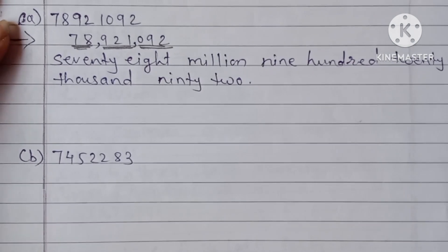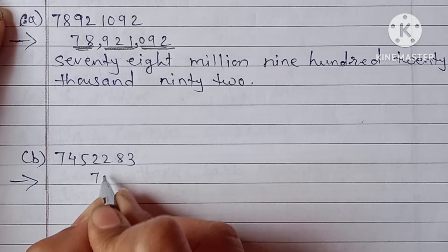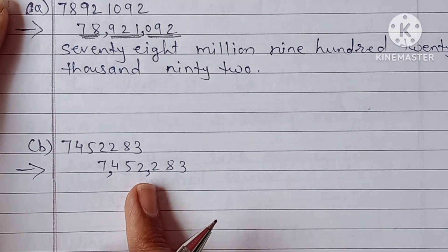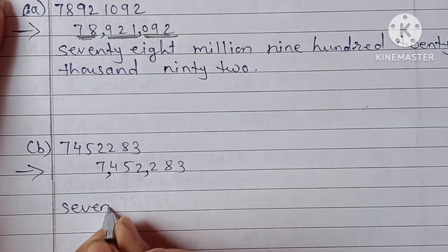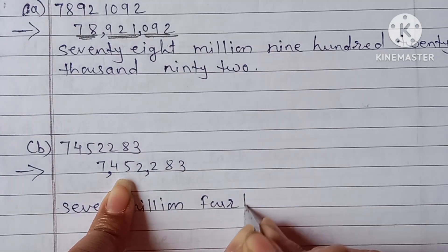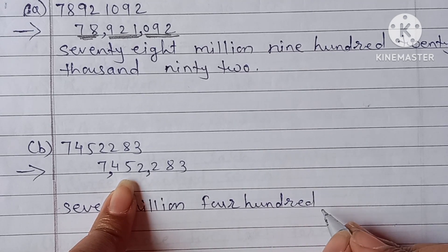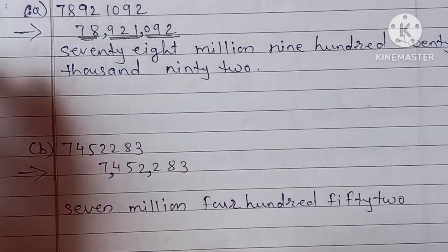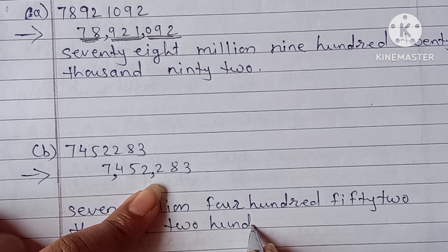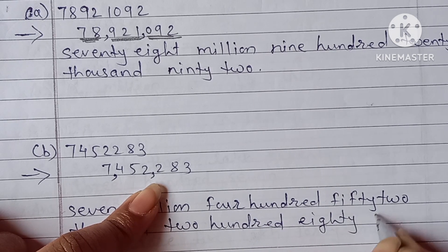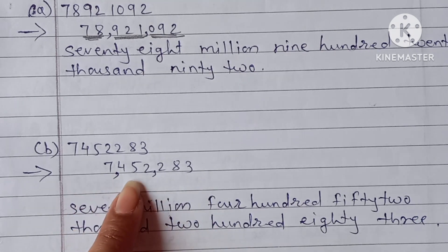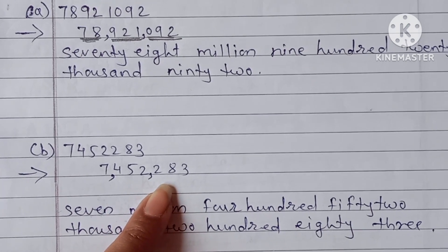Similarly for the second number: 7,45,22,83. After three digits give comma, then three digits give comma. So: 7 million, four hundred and fifty-two thousand, two hundred and eighty-three. The answer is seven million four hundred and fifty-two thousand two hundred and eighty-three.